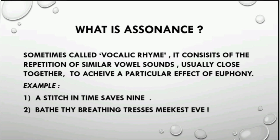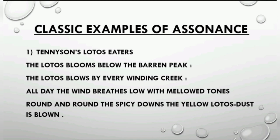Now let's look at classical examples from English literature. The first is from Tennyson's Lotus Eaters, where the 'o' sound keeps repeating: 'The lotus blooms below the barren peak, the lotus blows by every winding creek, all day the wind breathes low with mellow tones, round and round the spicy downs the yellow lotus dust is blown.' In the first line you will notice the repetition of the vowel 'o' and 'e', and this effect continues throughout all the lines.